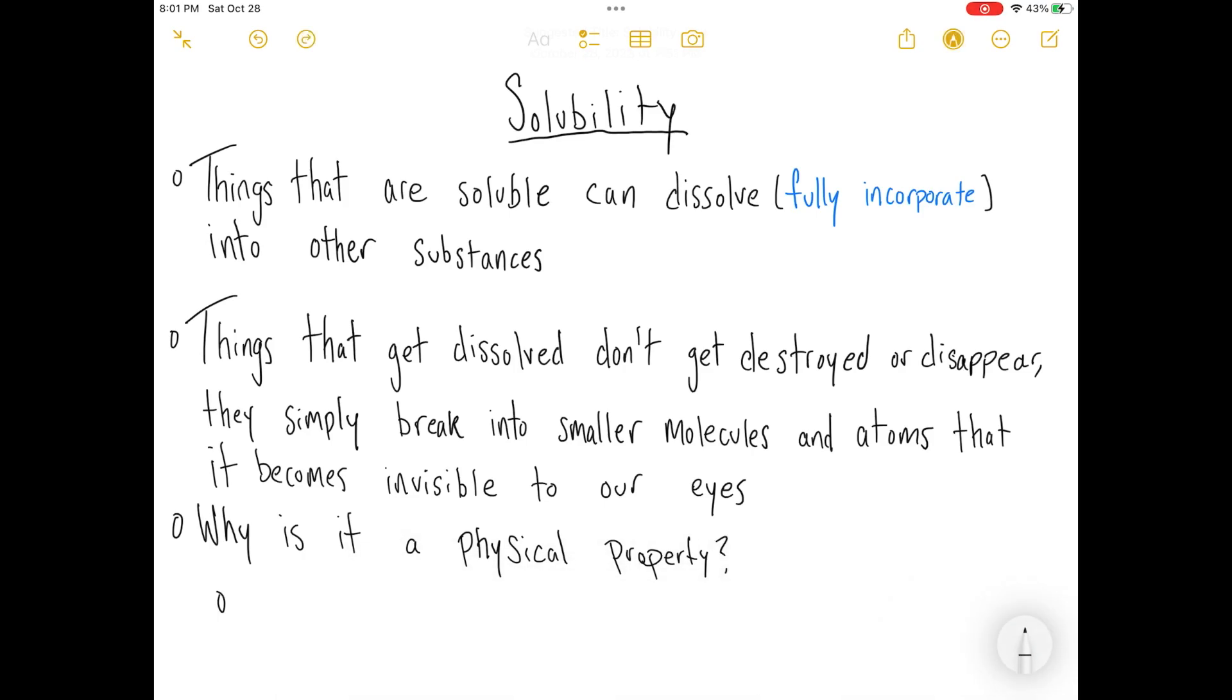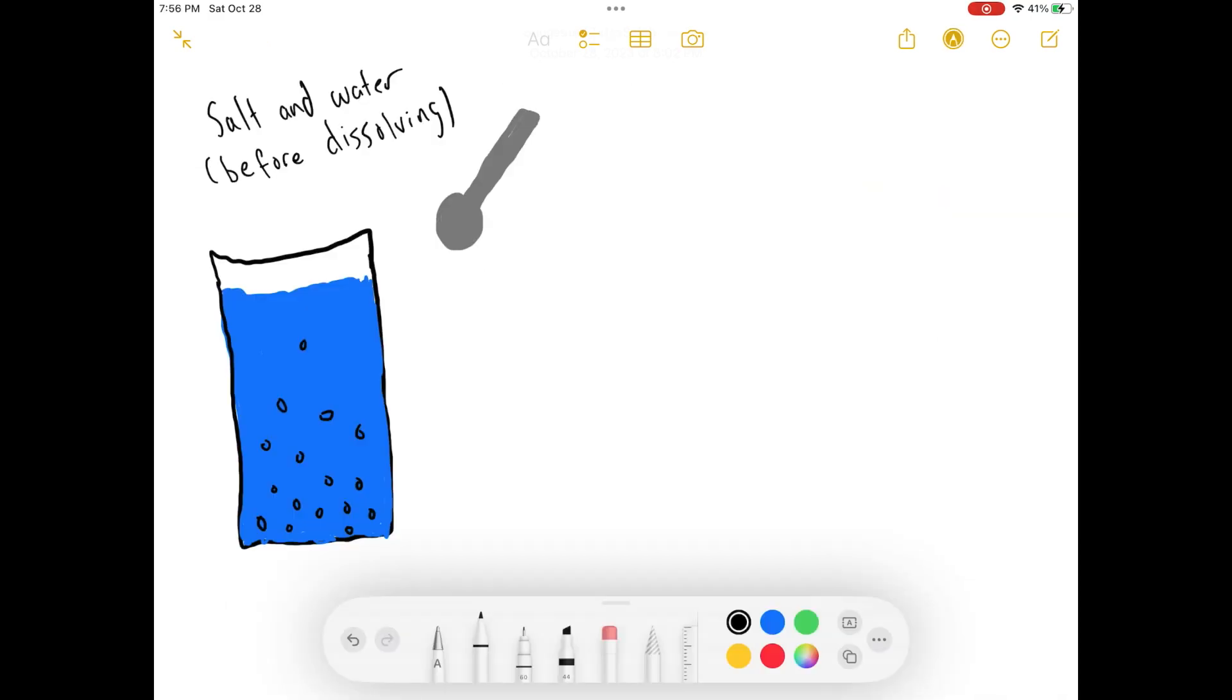Now, the reason why this is a physical property is because not everything is soluble. And we can use this to identify matter and whether or not we can use it for certain materials over others when building or creating objects. And we can really see this concept of things being soluble or insoluble with salt and water. With salt and water, this is what the cup looks like before dissolving. And then we mix it up, stir it up.